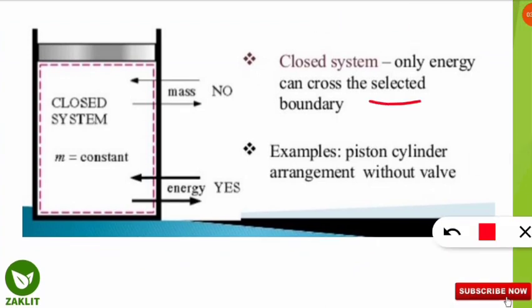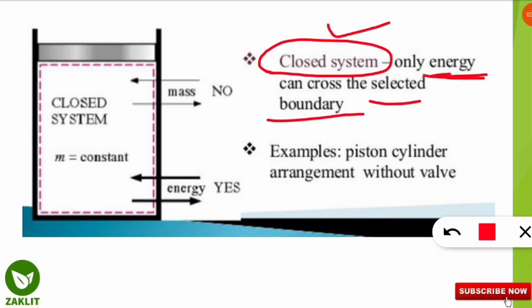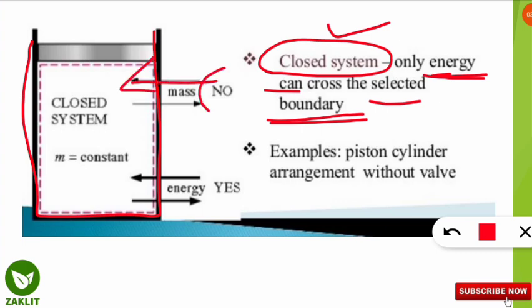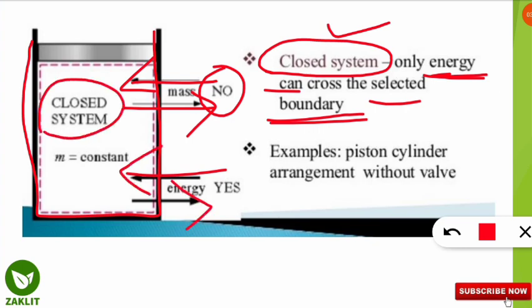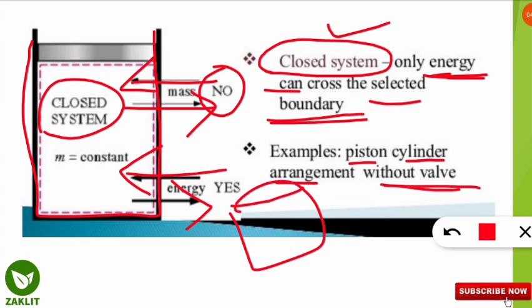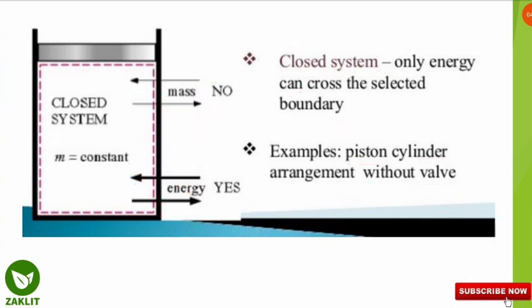In a closed system, only energy can cross the selected boundary. You might think closed means nothing is transferred, but in thermodynamics, a closed system means only energy can cross the boundary — mass cannot. As shown, mass cannot be transferred but energy can. The example is a piston-cylinder arrangement without a valve: energy can transfer but mass cannot.